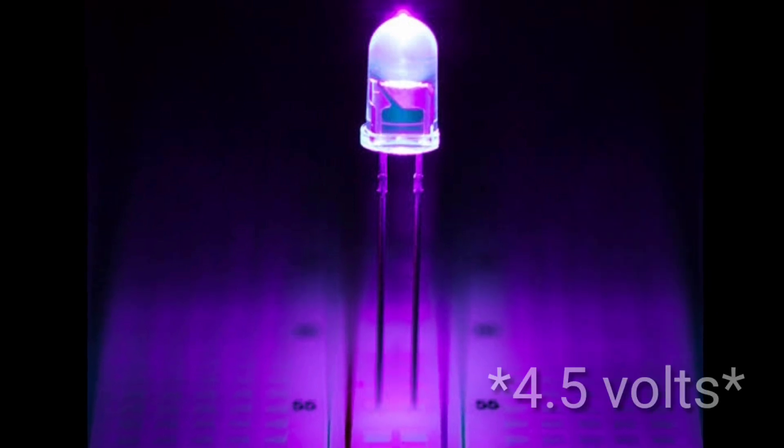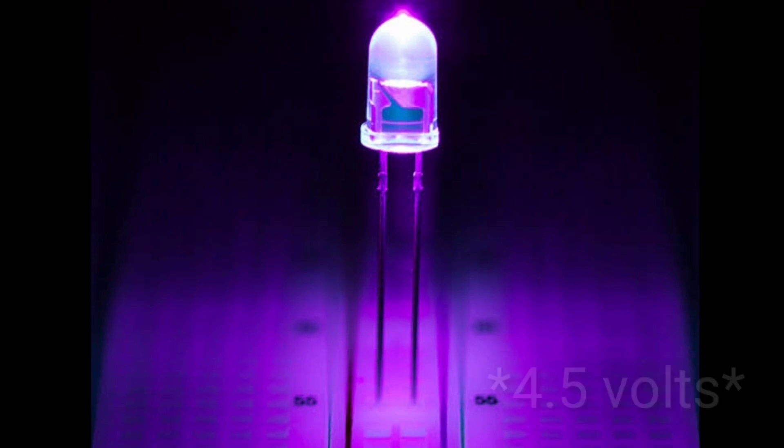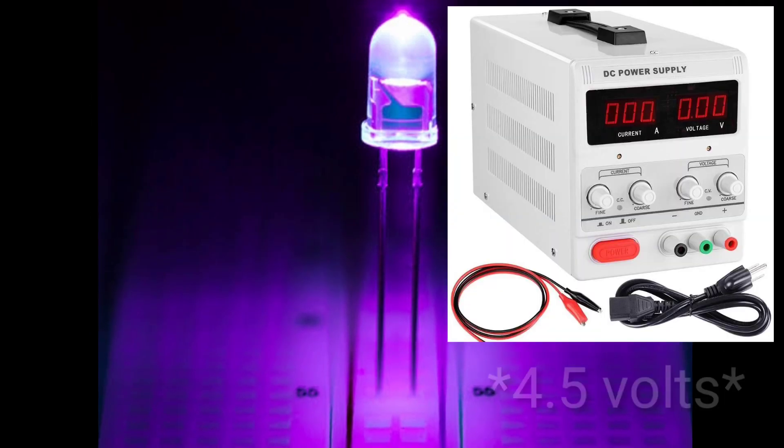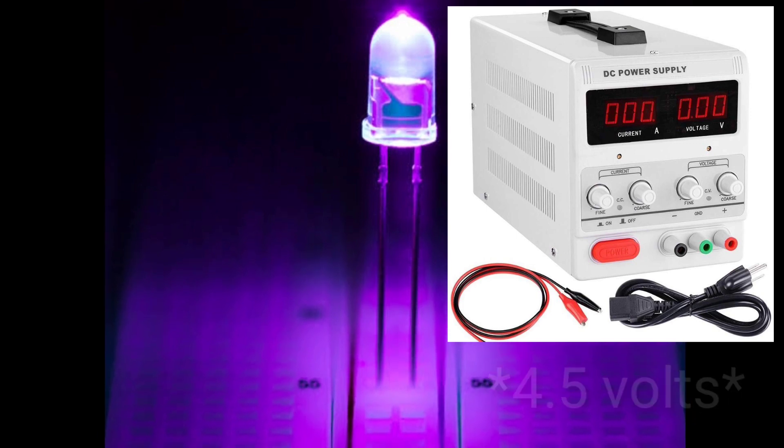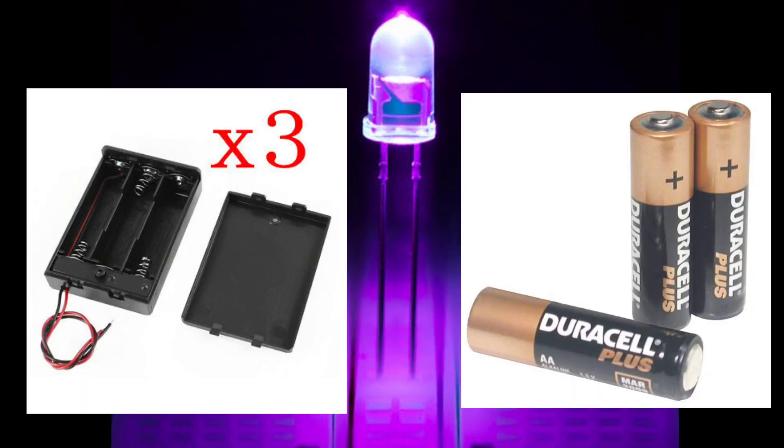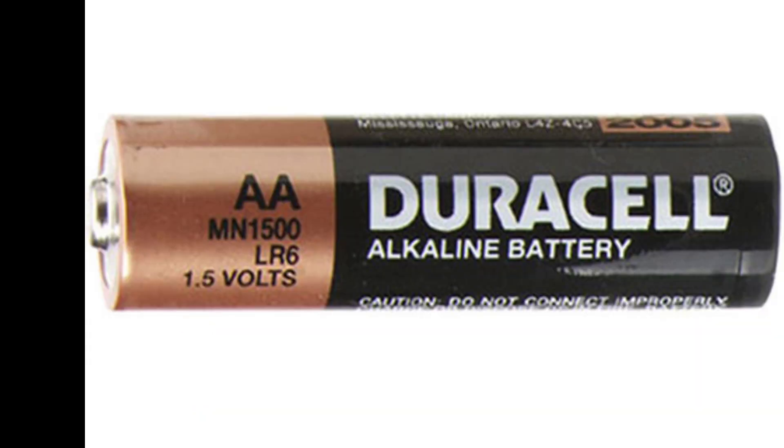So for this circuit, we will use 4.5V of power in order to light the UV LED. If you have a DC power supply, you can use this and adjust the voltage so that it outputs 4.5V, or you can connect 3 AA batteries in series to produce 4.5V. Since each AA battery gives out 1.5V, 3 in series will give out 4.5V.